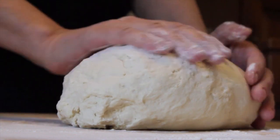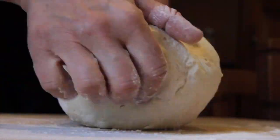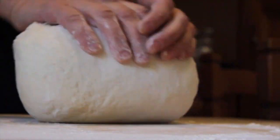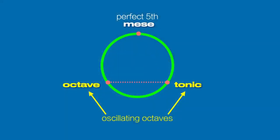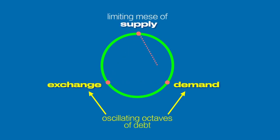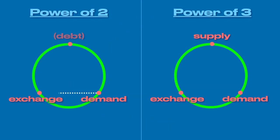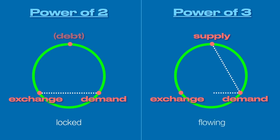There is no alchemy by which to create two loaves of bread when there was initially only one. Just as the octave requires its expansive nature to be checked by the means, fiat money requires its expansive nature to be checked by supply. In this way, money reverts back to its previous form of supply, rather than expanding out into a future form of debt.